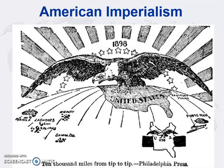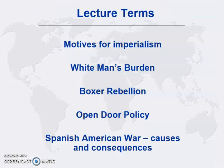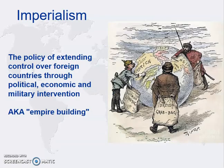Hi everyone. Welcome back to our discussion on American imperialism around the turn of the 20th century. Please make sure and study the lecture terms to prepare for the unit exams. As we begin our discussion, it would be helpful to get a working definition of what imperialism was. Imperialism is the policy of a nation seeking to extend its cultural power, its economic power, its political reach, usually via military intervention with other countries across the globe.